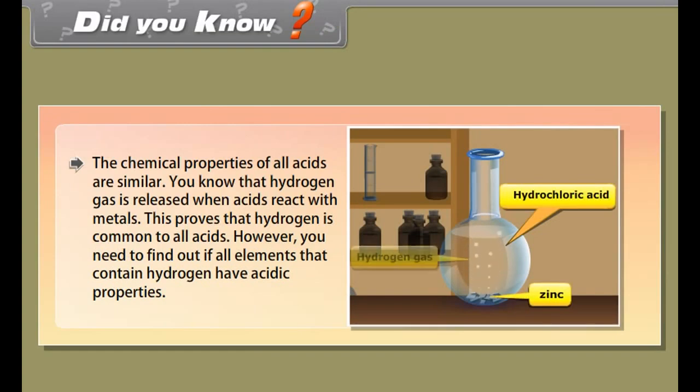When you mix an acid or base with water, it results in decrease in the concentration of ions per unit volume. This process is called dilution and you get diluted acid or base.